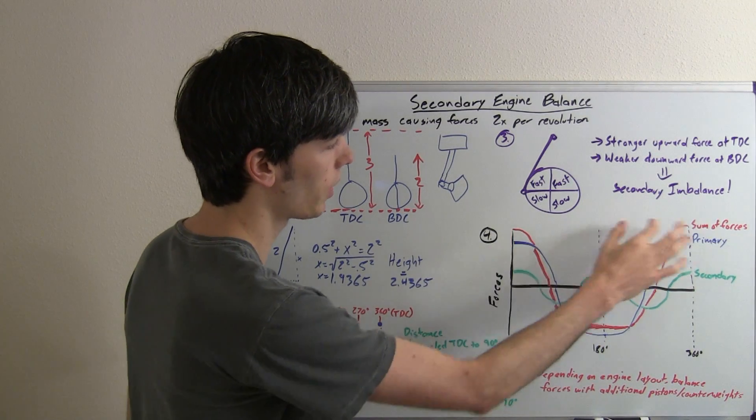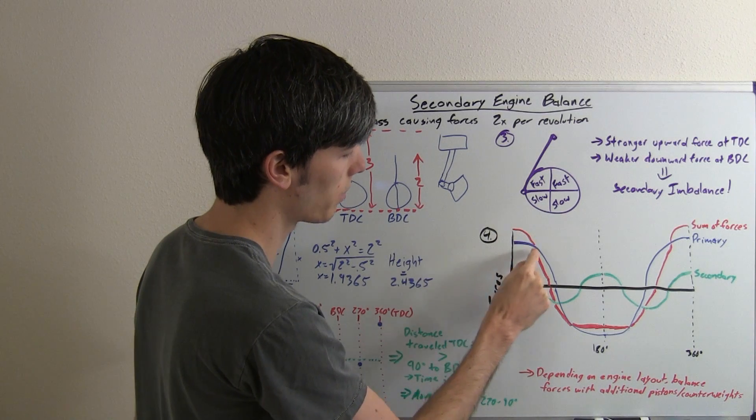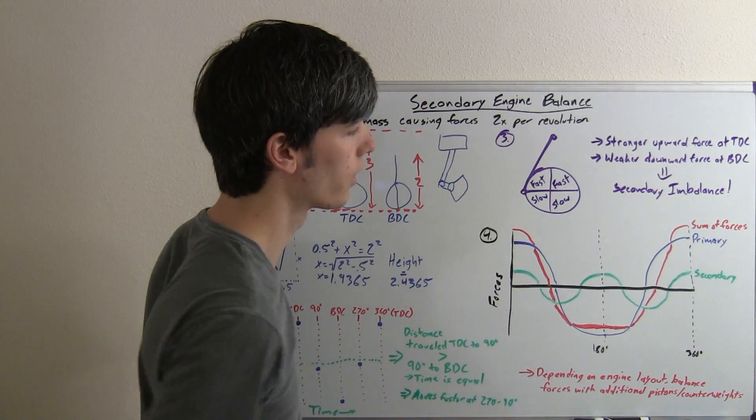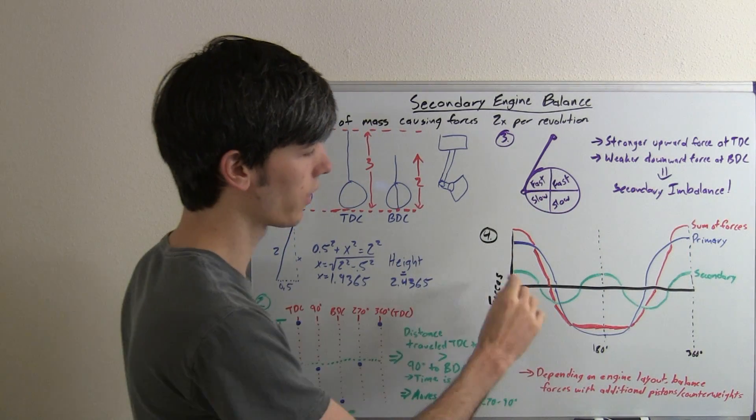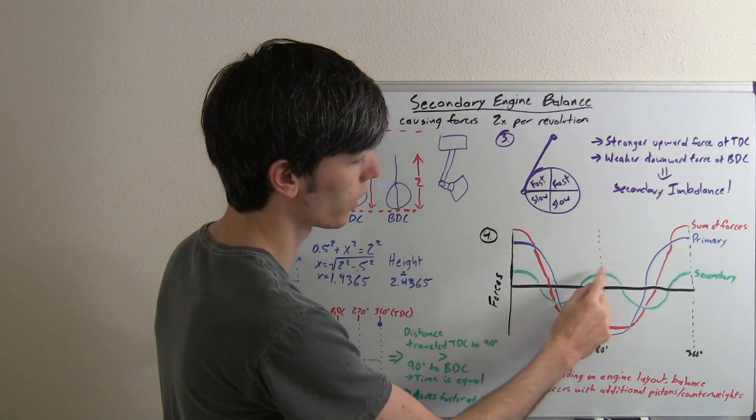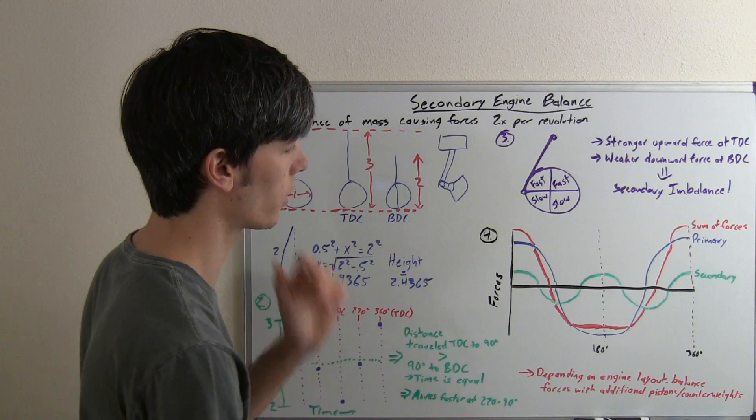So our force, or some of our forces, is going to look more like this. So at top dead center, it's going to be a bit higher, and then it's going to be a bit lower at bottom dead center, and then once again a bit higher. So what will cause that? Well, the secondary force, so what the graph of this is going to look like, occurring twice per full revolution of the crankshaft, that's why it's called secondary force.